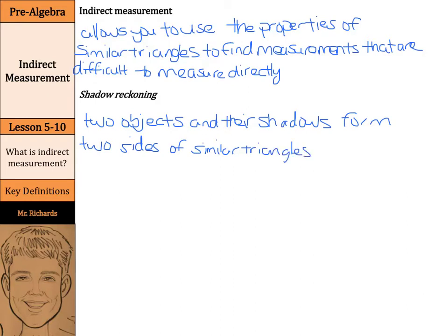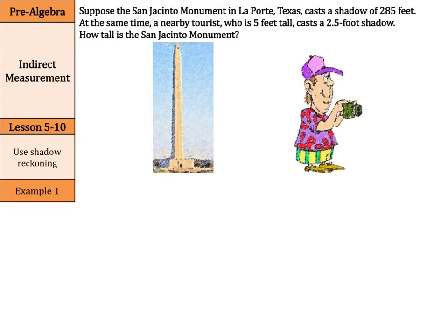Let's get into our examples. Our first example shows us how to use shadow reckoning. Suppose the monument in La Porte, Texas casts a shadow of 285 feet. At the same time, a nearby tourist who is five feet tall casts a two and a half foot shadow. How tall is the monument?